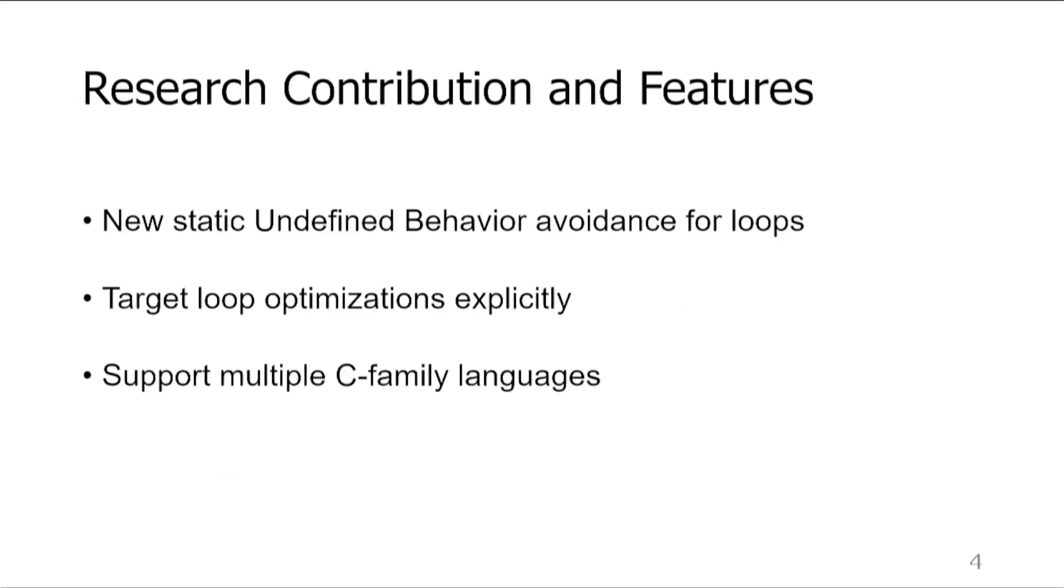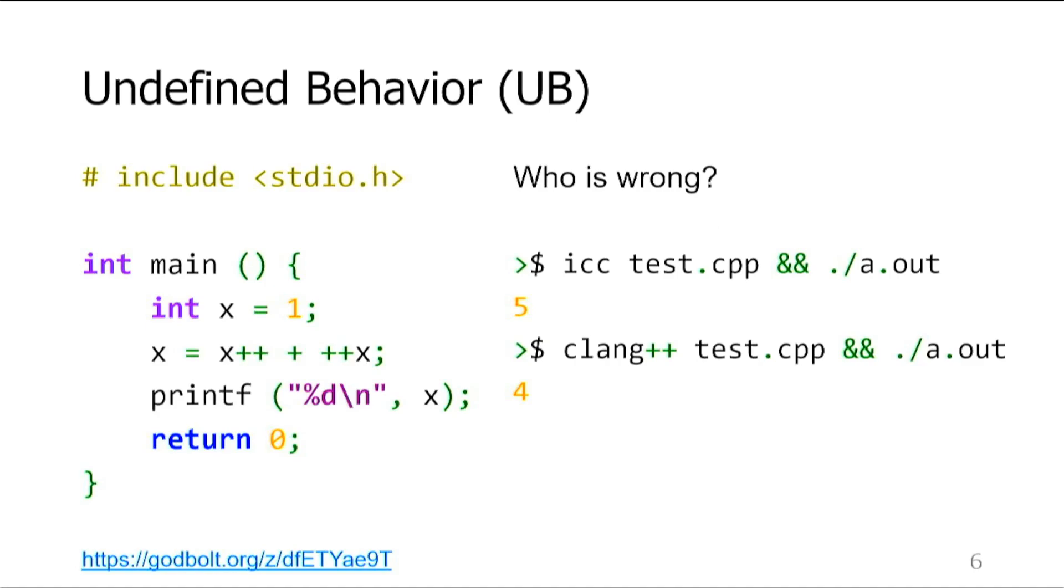There are three key features that make YarpGen so effective. The first one is a novel static undefined behavior avoidance mechanism. C family languages are infamous for their undefined behavior. For example, let's take a look at the code snippet on the left. Intel C++ compiler and Clang returned two different results for it. At first glance, it might look like one of them is wrong, but it turns out they are both correct. This program contains undefined behavior. The expression involves several reads from and writes to the same variable, and their order is not defined by the C++ standard. In this case, the correct compiler can do whatever it wants. Therefore, if the test contains undefined behavior, the result of its execution is undetermined and useless.